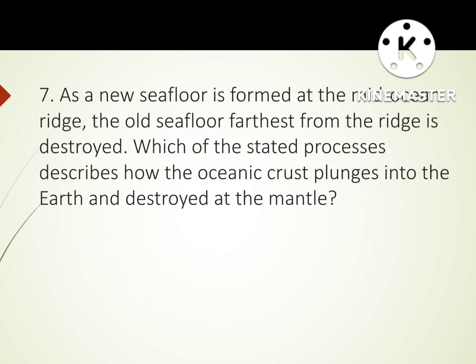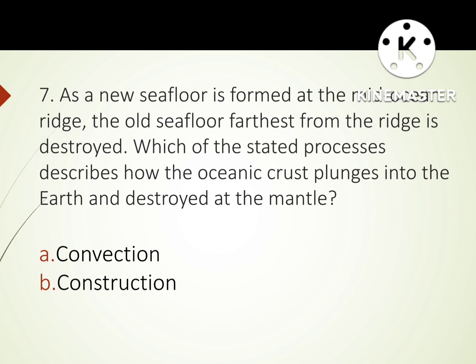Number 7 question: As a new seafloor is formed at the mid-ocean ridge, the old seafloor farthest from the ridge is destroyed. Which of the stated processes describes how the oceanic crust plunges into the earth and is destroyed at the mantle? A. Convection. B. Construction. C. Diversion. D. Subduction. The correct answer is D: Subduction.